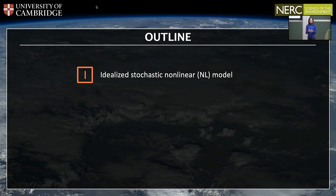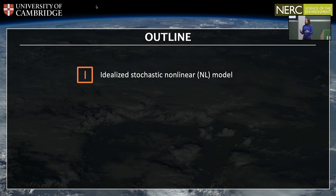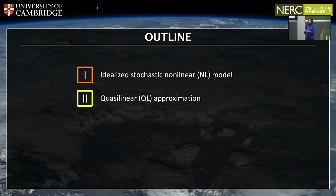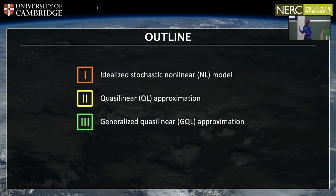The rough plan for the talk is as follows. I'm going to begin by introducing a very simple idealised system that's stochastic and fully non-linear — arguably one of the simplest systems that allows for the spontaneous formation and equilibration of jets. Then in the next parts of the talk, we're going to try to diagnose certain aspects of behaviour by systematically eliminating certain features, such as non-linear interactions. I'll introduce the quasi-linear approximation, then a generalised version of it, and finally conclude.